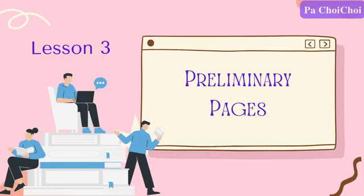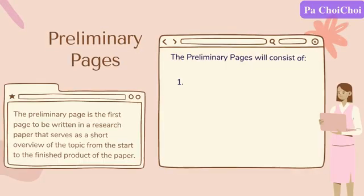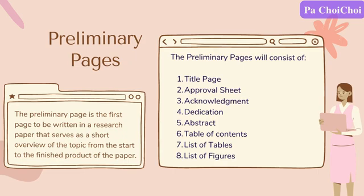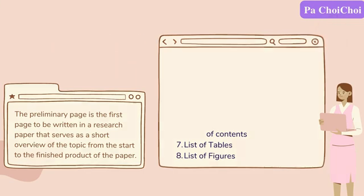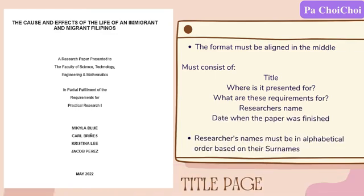Lesson number 3: Preliminary Pages. The preliminary page is the first page to be written in a research paper and serves as a short overview of the topic from start to the finished product. The preliminary pages consist of the following. A title page — the format must be aligned in the middle and must consist of the title, where it is presented, what requirement it is for, the researcher's name, and the date when the paper was finished.